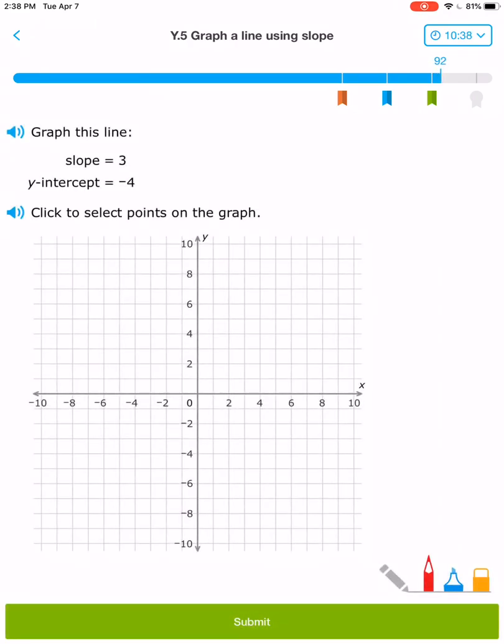All right, one more time. A slope of 3 and a y-intercept of -4. So my y-intercept can be found down there at -4. And a slope of 3 tells me 1, 2, 3 up, 1 to the right, and there's my line.